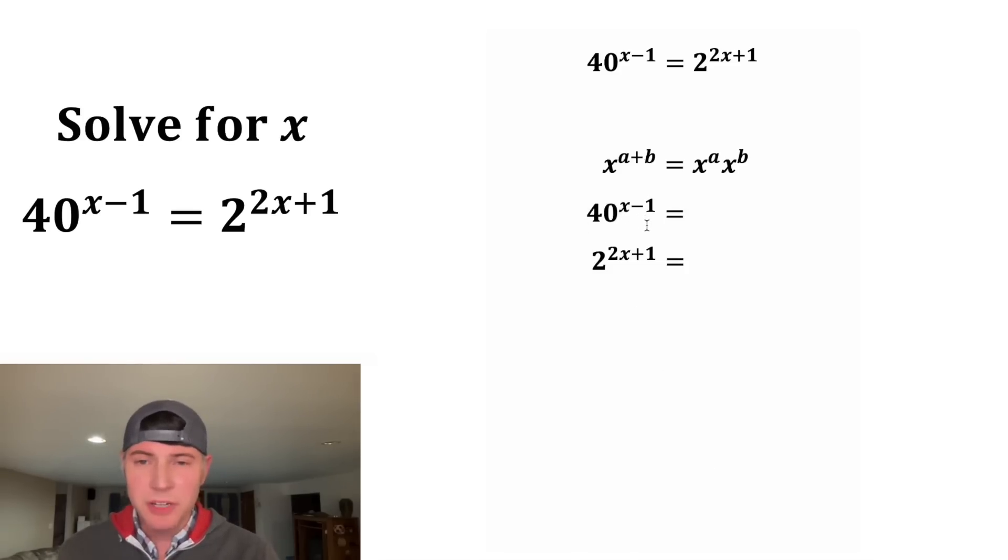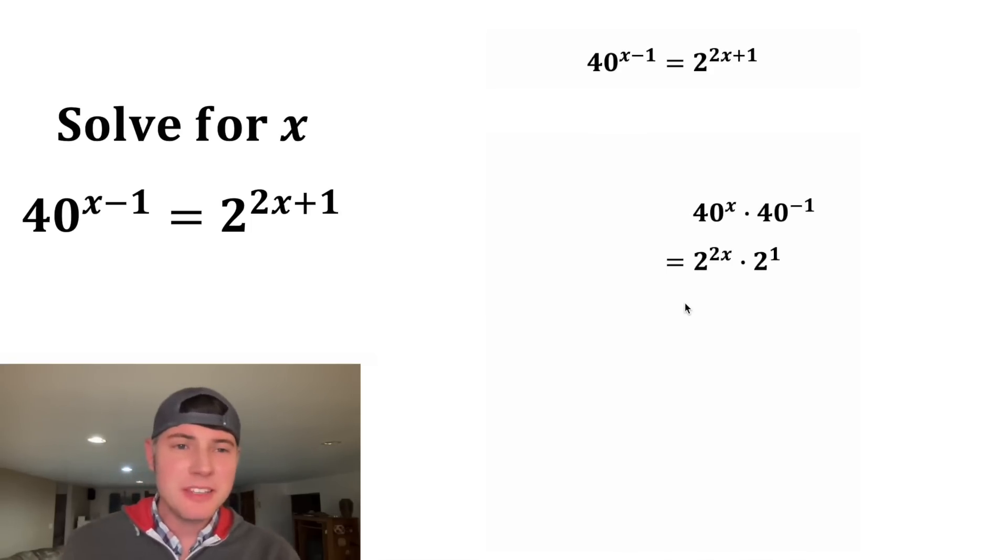You can think of x minus one as x plus negative one. So this 40 to the x minus one would become 40 to the x times 40 to the negative one. And this 2 to the power of 2x plus one is equal to 2 to the power of 2x times 2 to the power of one. And we can move these up here.